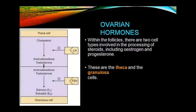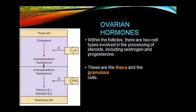Androgens are converted by LH. Then FSH acts on granulosa cells which convert androgens to estrone and estradiol, called E1 and E2. These conversions occur in the granulosa cells.